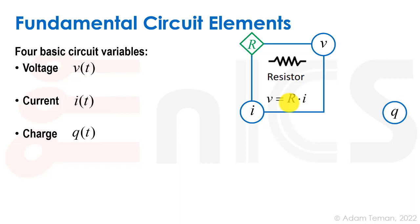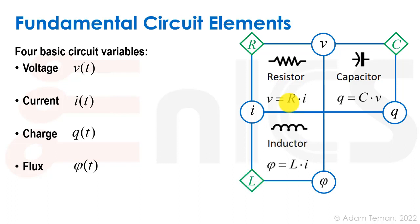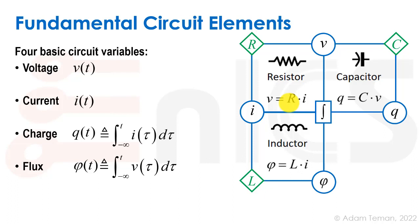We also have charge, and there is a relationship between voltage and charge. The constant providing this relationship is capacitance C, and the element is called a capacitor. We also have flux, and flux provides a relationship with current called inductance, and the element is an inductor marked as L. We also found cross relationships between voltage and flux and between current and charge, creating this nice complete square. But there's something missing: what is the element providing the flux-to-charge relationship?